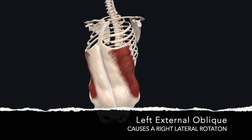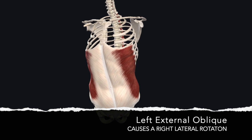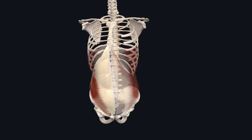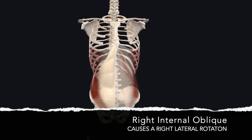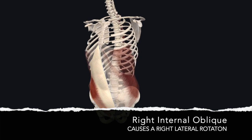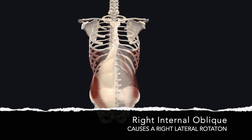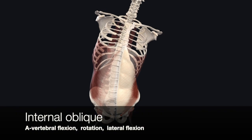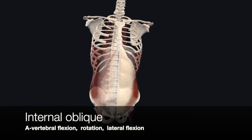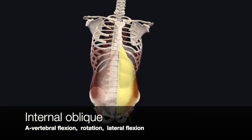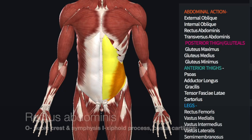In the external oblique, if we're rotating to the right, our left muscle is engaged. However, for the internal oblique, when we're rotating to the right, it's because our right internal oblique muscle is engaged. Its action will also involve a lateral flexion of the vertebrae.